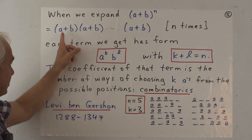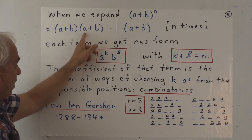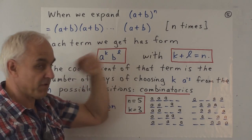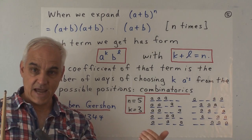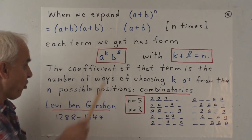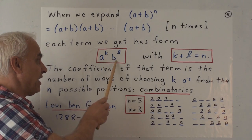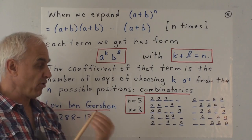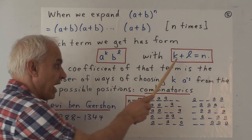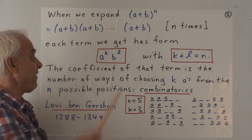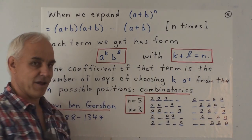So we have to make n choices. One for this bracket, one for this bracket, all the way up to one for this bracket. That means that each term we're getting, when we expand this out individually, has the form a to the k, b to the l. Some power of a times some power of b, where the total power, k plus l, has to be n. Because we have n terms being multiplied all together.